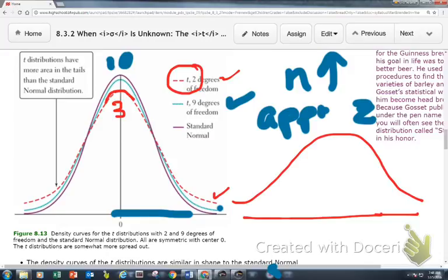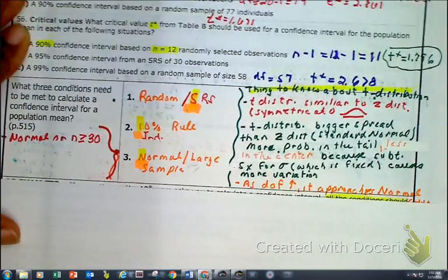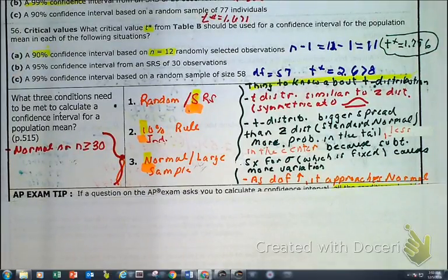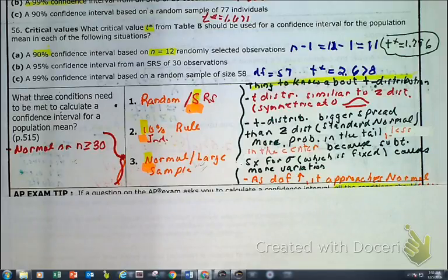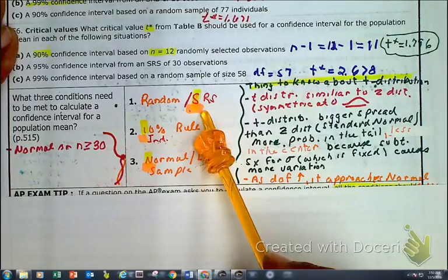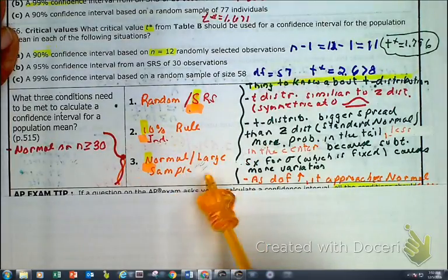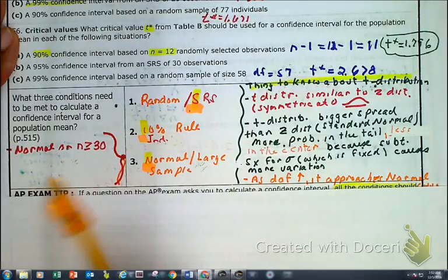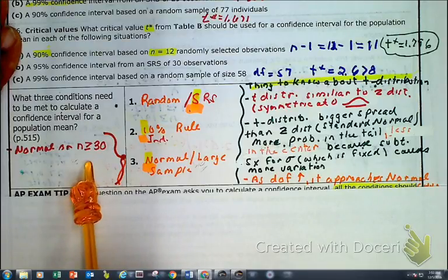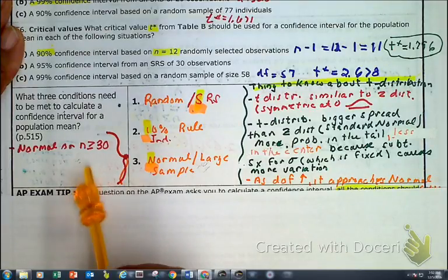That's some basic stuff about the T — multiple choice questions waiting to happen — so let's move on to other aspects of the T distribution. Let's remind ourselves of the conditions and assumptions. We established the difference between T and Z, and now, if it is a T, what conditions have to be met? We know: randomness, the 10% rule, and normality if possible. But if it's not approximately normal, remember, a large sample size is okay. And 30 seems to be the golden number for a large enough sample size.